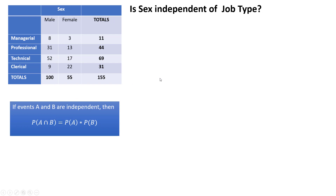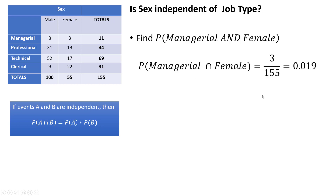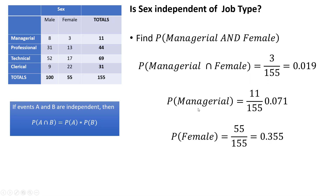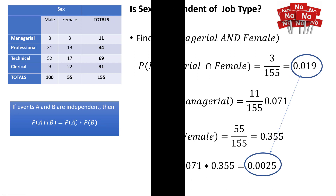The probability of A could be the probability of a male or the probability of a female. Let's try one: find the probability of managerial and female — that was the one we did earlier. If sex is independent of job type, then the probability of managerial times the probability of female should equal that intersection probability. I multiply them and — nope — so these are definitely not independent events.